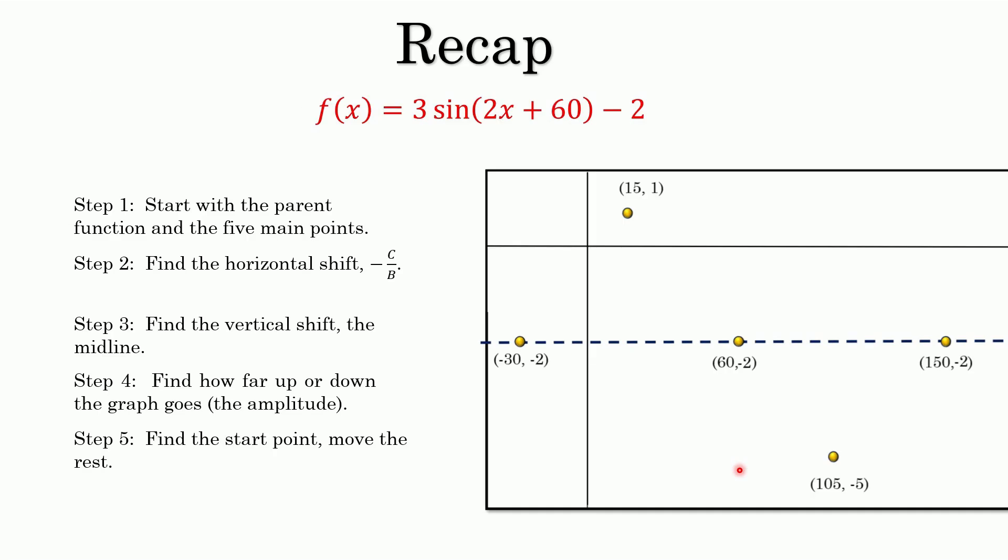So to recap, here's what we got. You start with the parent function. You graph it, put it all together and make it beautiful. Then you figure out how far left or right it goes by negative C over B. Then how far up or down it goes by this number right here. And then keep in mind what the amplitude is. Then you take these two things right here and you apply them to your original number. Take the period, divide by four, and then add that number to each of these x's to move them along. And then just apply the amplitude to those and boom, you got it.